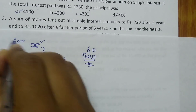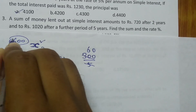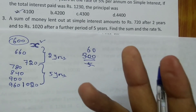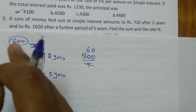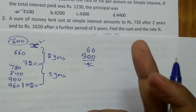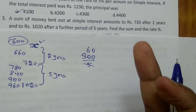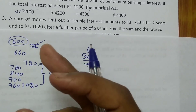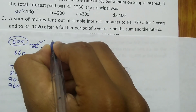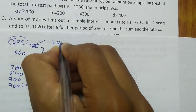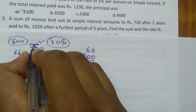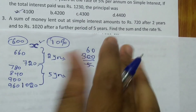Subtracting another Rs.60 from Rs.660 gives Rs.600, which is the principal amount. For Rs.600 the annual interest is Rs.60. So Rs.60 as a percentage of Rs.600 is 10%. Therefore the rate of interest is 10% and the principal is Rs.600.